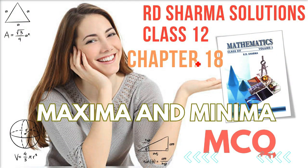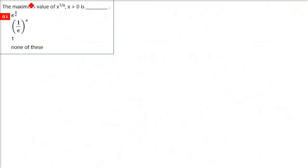This is RD Sharma Solution Class 12 Chapter 18 Maxima and Minima. We are taking the multiple choice questions, i.e. MCQ. The first question: the maximum value of x to the power 1 by x, where x is greater than 0. There are 4 options and we have to find out which one is the correct answer.